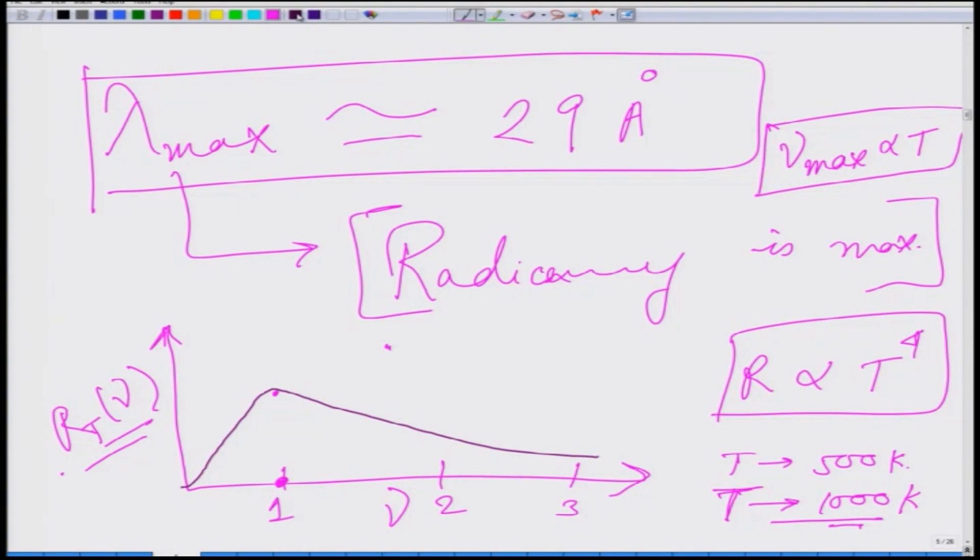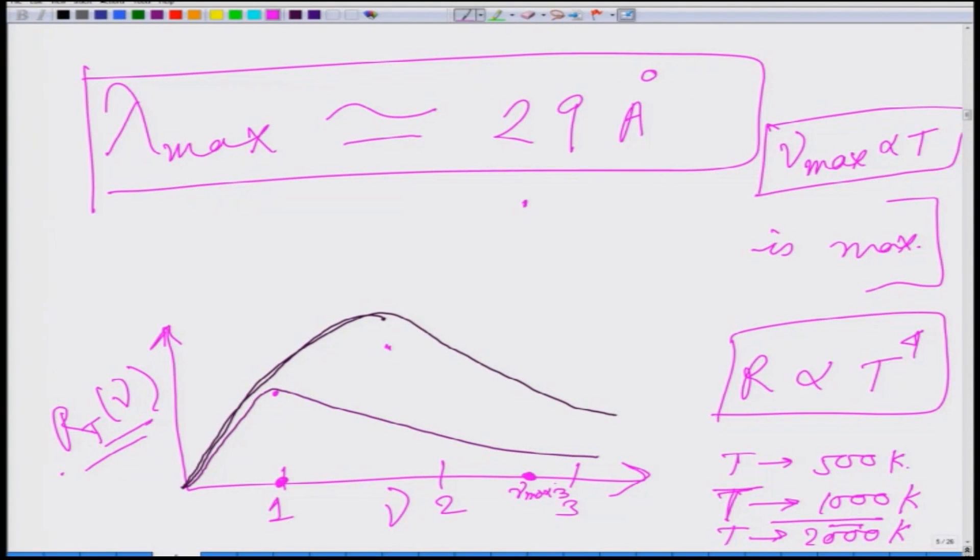Let us draw that too, suppose here. And if I now write T to be 2000 Kelvin then nu max value is suppose right here. So at this nu max 3 radiance is maximum. So basically I then get something like this. This is how this radiation should depend on the frequency of radiation.